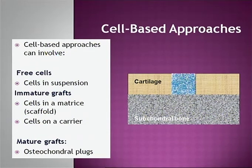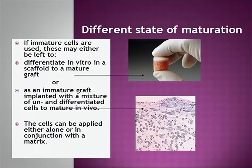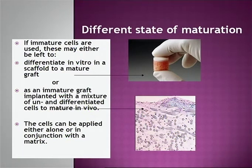Cell-based approaches can involve free cells — cells in suspension, which we started here in 1987. These could be immature grafts, cells in a matrix or scaffold, cells on a carrier like MACI, or mature graft osteochondral plugs. If immature cells are used, they may be left to differentiate in vitro in the scaffold, or implanted as an immature graft with a mixture of undifferentiated cells to mature in vivo.